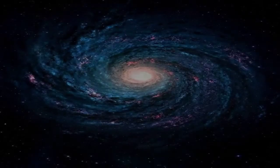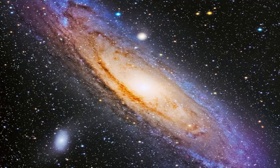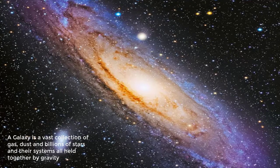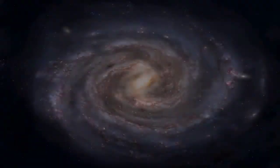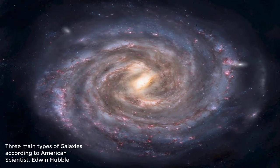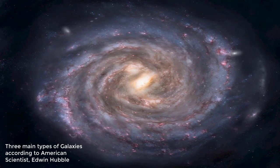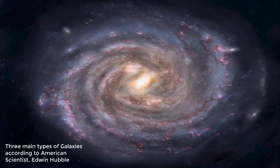Our solar system is found on an outer spiral arm of the Milky Way galaxy. A galaxy is a vast collection of gas, dust and billions of stars in their systems, all held together by gravity. There are three main types of galaxies according to American scientist Edwin Hubble.